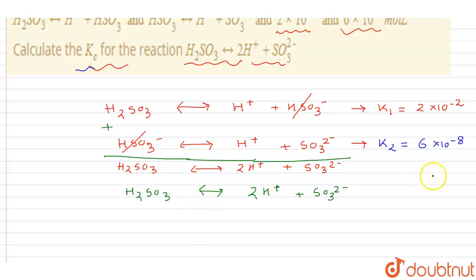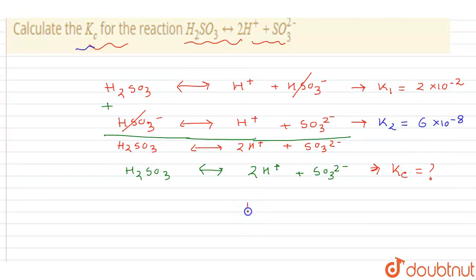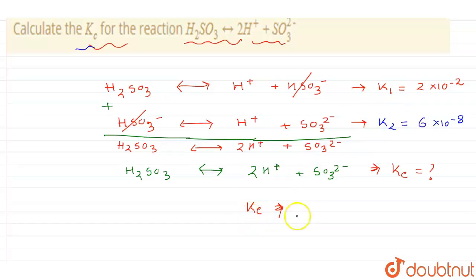Whenever we add two reactions, the equilibrium constant of the resulting equation is obtained by multiplying the individual equilibrium constants. So if we assume the combined constant as Kc, multiplying K1 and K2 will give us the equilibrium constant value of the resulting equation — that is, Kc = K1 × K2.